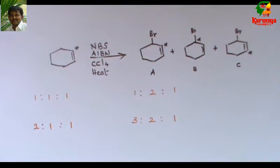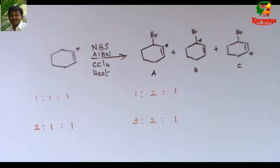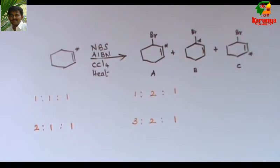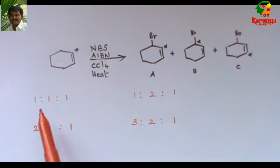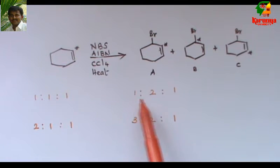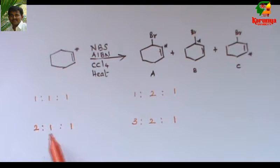All are different because of the labeled carbon. What will be the ratio of A, B and C? Whether it is 1:1:1, 1:2:1, 2:1:1, or 3:2:1?